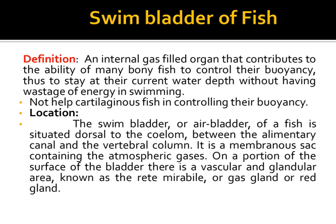Regarding the location of the swim bladder: the swim bladder, or air bladder, of a fish is situated dorsal to the coelom, between the alimentary canal and the vertebral column. It is a membranous sac containing atmospheric gases, which may vary in different types of fishes. On a portion of the surface of the bladder there is a vascular and glandular area known as the rete mirabile, or miraculous network, which is a rich network of blood capillaries — also called the gas gland or red gland.